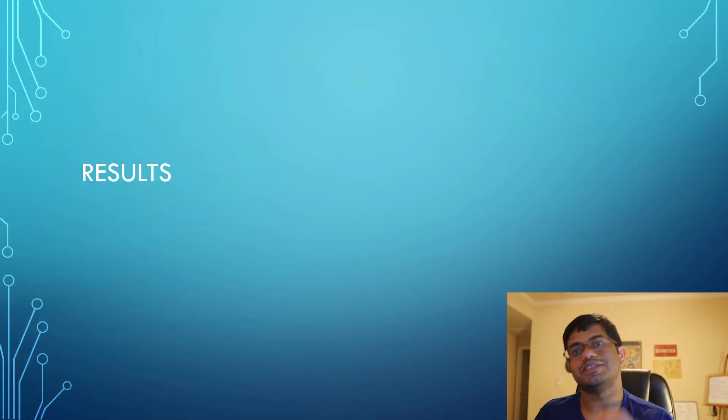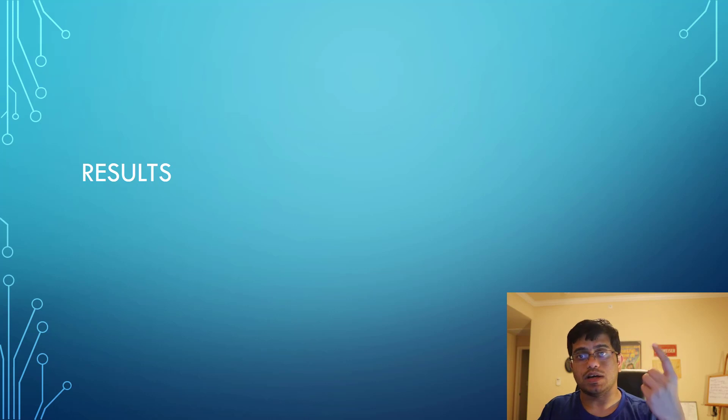Let's talk about the results of this paper. This paper gives us three key takeaways. First, we studied the quality of vector representations in terms of syntactic and semantic similarities across various models. Second, we observed that we could train high-quality word vectors using very simple model architectures instead of big neural net language models. Third, because we can reduce computational complexity to such lower levels, we can actually learn over large datasets.